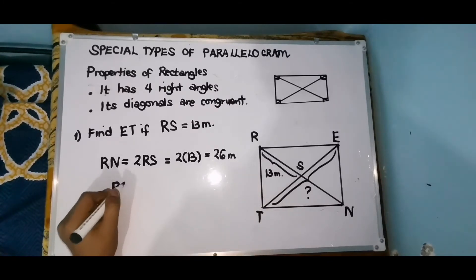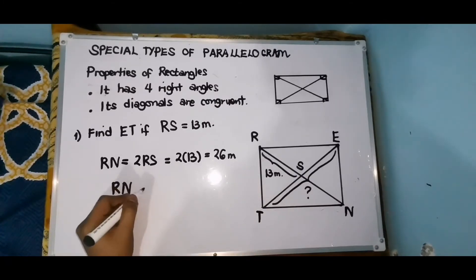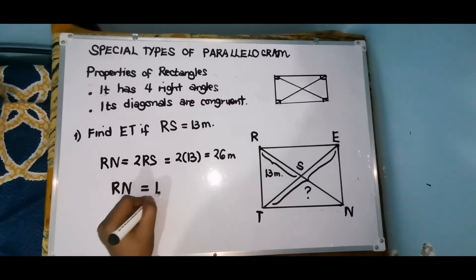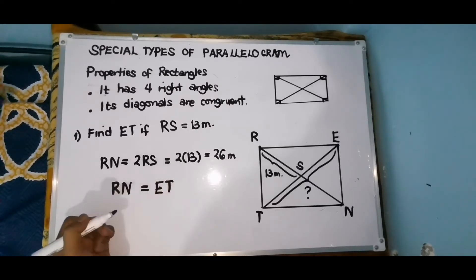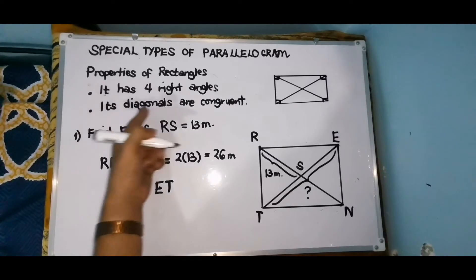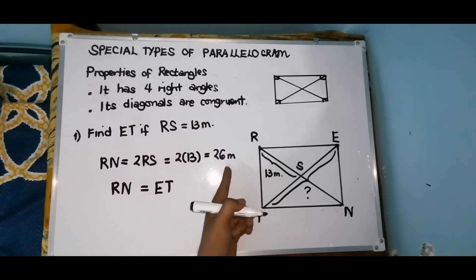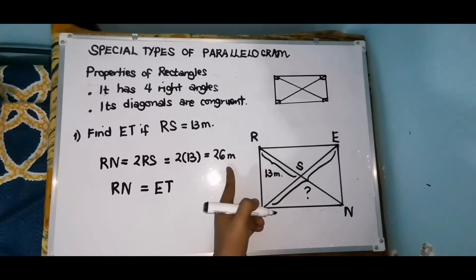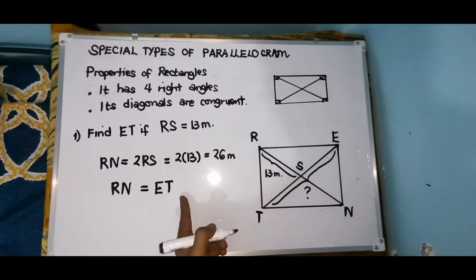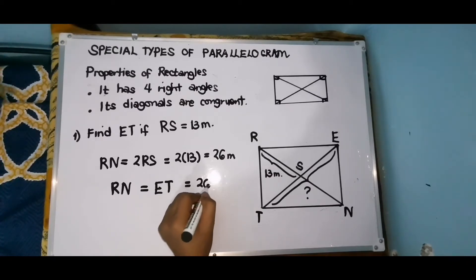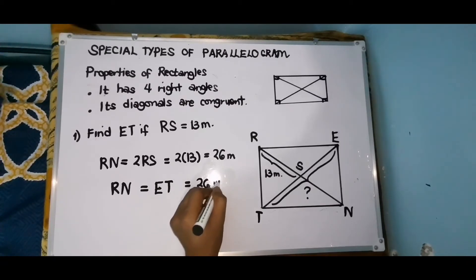And RN is equal to BD. Kasi, according dito sa properties natin, its diagonals are congruent. Since ang measurement ni RN ay 26 meters, therefore BD is equal to 26 meters.